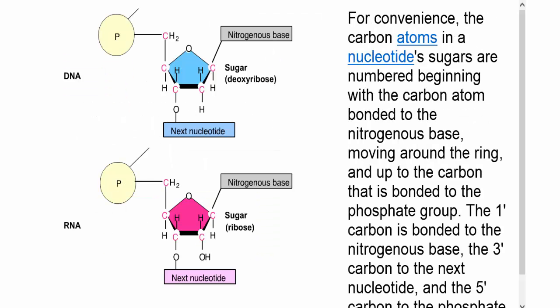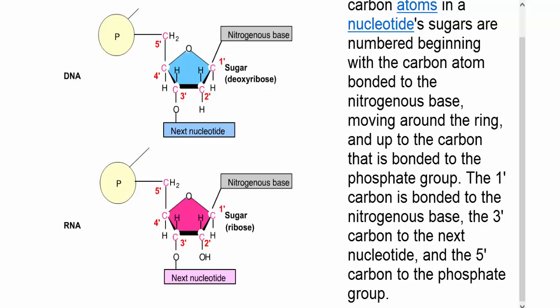For convenience, the carbon atoms in a nucleotide's sugars are numbered, beginning with the carbon atom bonded to the nitrogenous base, moving around the ring, and up to the carbon that is bonded to the phosphate group. The one-prime carbon is bonded to the nitrogenous base, the three-prime carbon to the next nucleotide, and the five-prime carbon to the phosphate group.